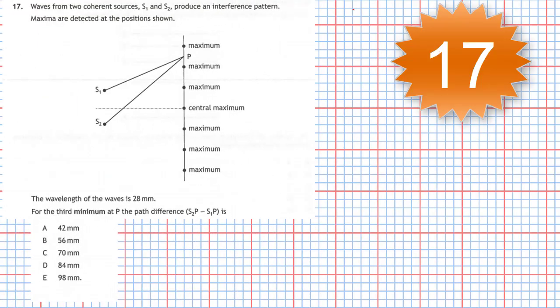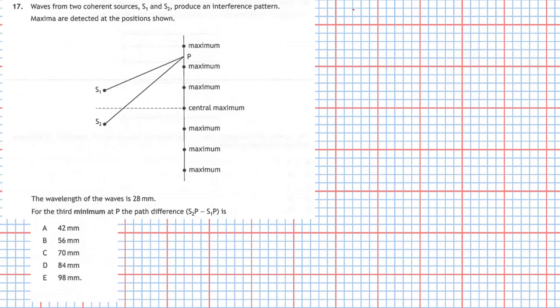Question 17 from section 1 of the 2019 Higher Physics Examination. Waves from two coherent sources S1 and S2 produce an interference pattern. Maxima are detected at the position shown. The wavelength of the waves is 28 millimeters. For the third minimum at P, the path difference S2 to P minus S1 P is, and you're given five choices.